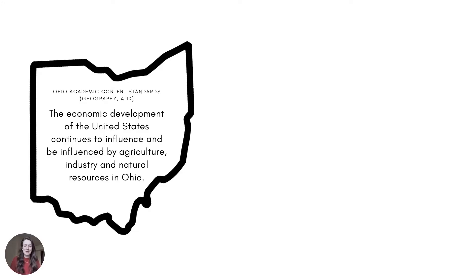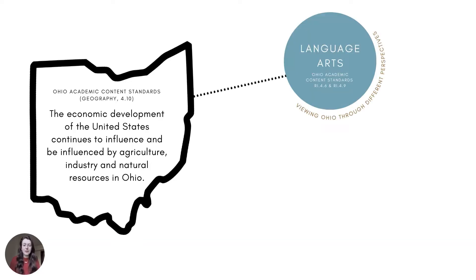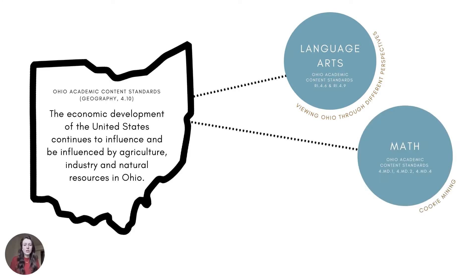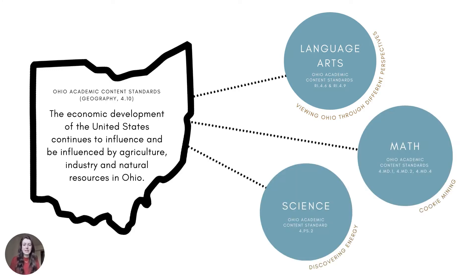Now that you have a little bit more background about what my unit is going to be about, let's step into it. As you just saw in that short infomercial, this is a social studies unit about Ohio, specifically about its land and resources. The unit aligns with Ohio academic content standard geography 4.11, which discusses Ohio and how U.S. development is influenced by Ohio's natural resources. In addition to that social studies standard, the unit includes language arts, math, and science lessons, and as seen here, each lesson correlates to at least one subject-specific Ohio academic content standard, as well as the social studies standard.